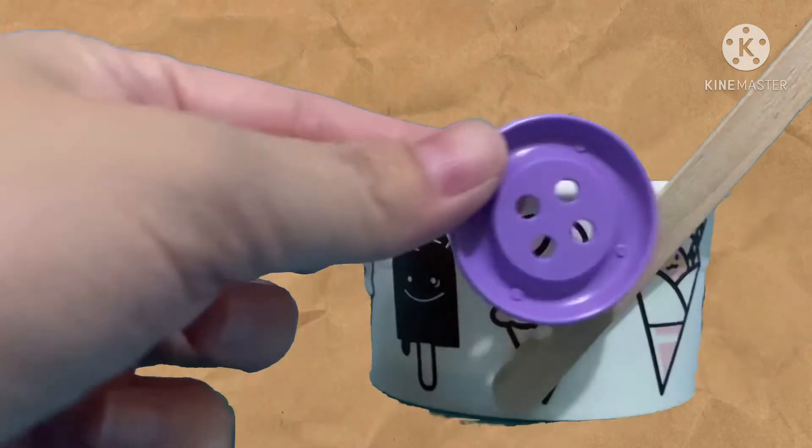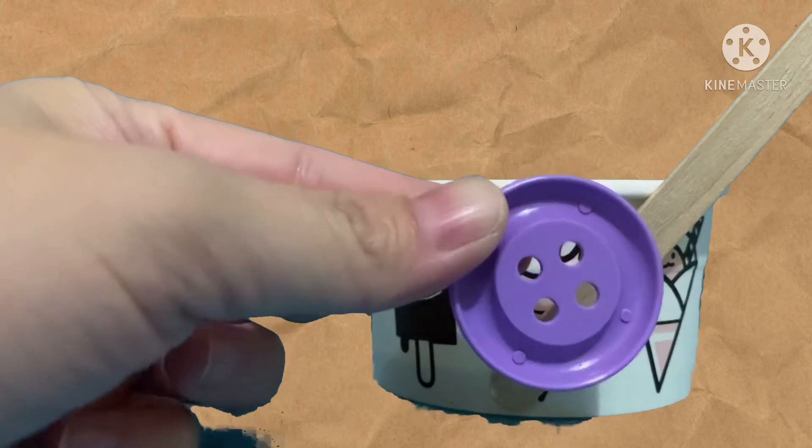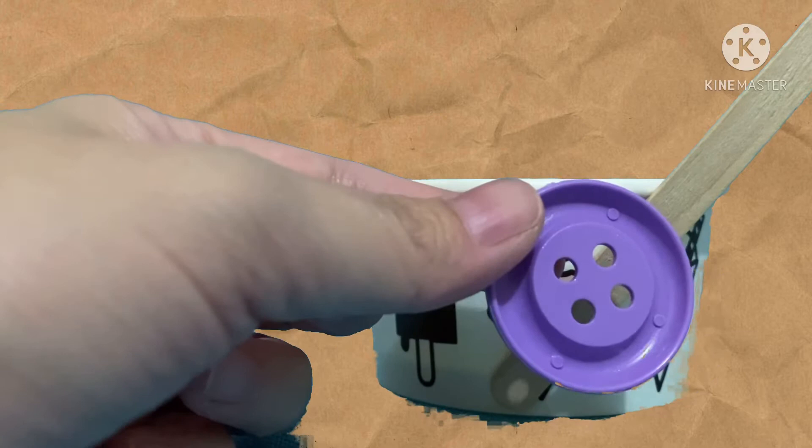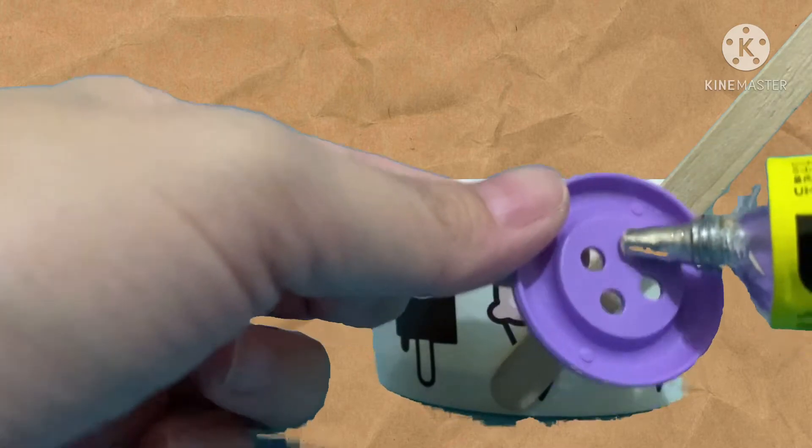Next, let's take a button. Spread the glue on the button and paste it on top of the ice cream stick.